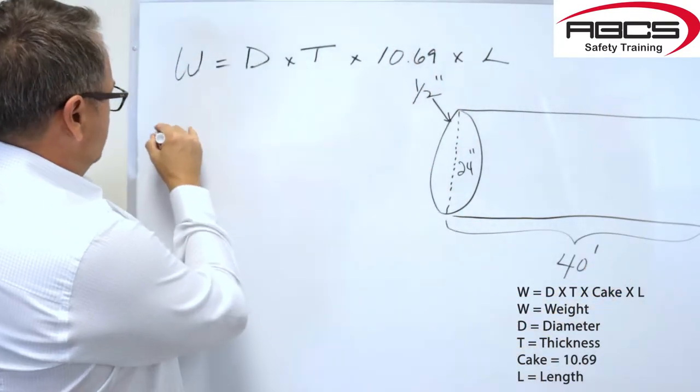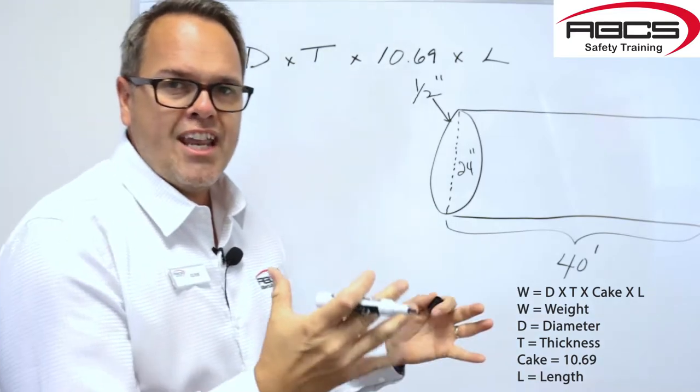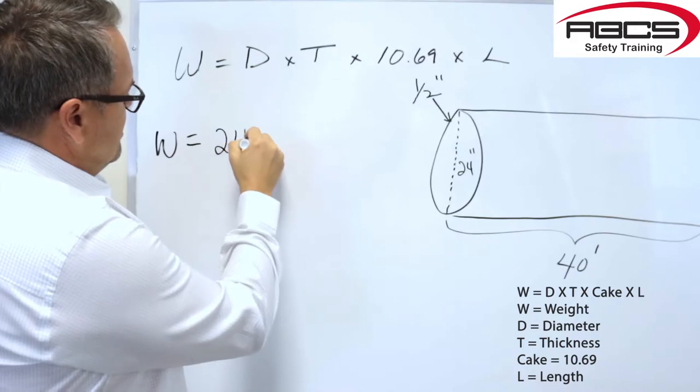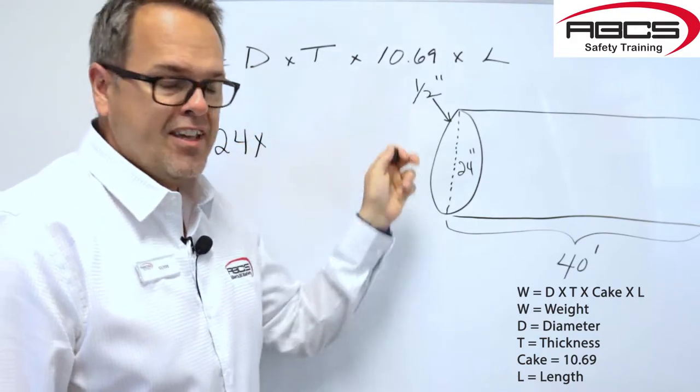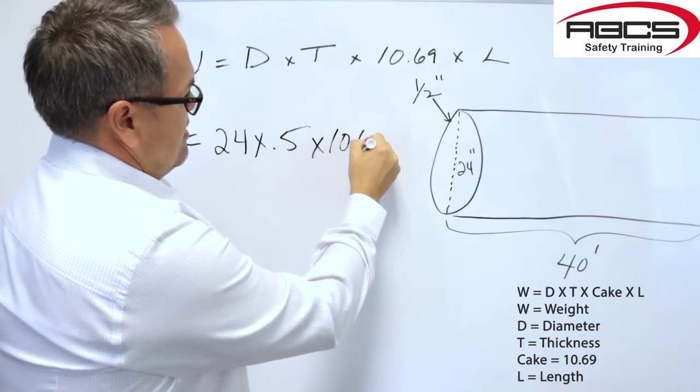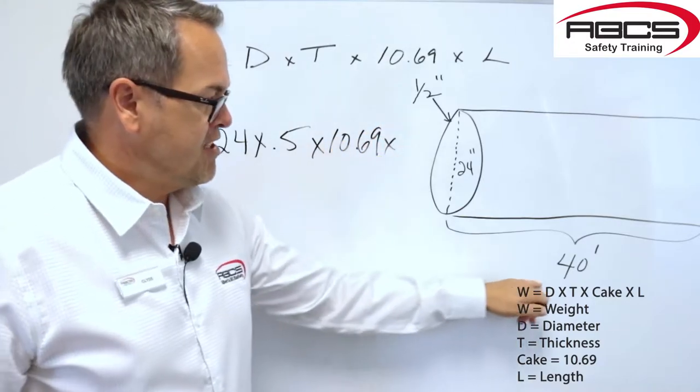The beauty of this formula is that you don't have to change any of the units. The diameter is 24 inch pipe, 24, times the thickness of the pipe, it's half inch, 0.5, times cake, 10.69, times the length, which I said was 40 feet.